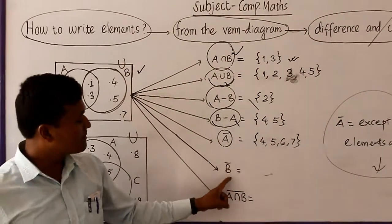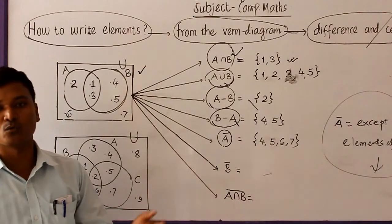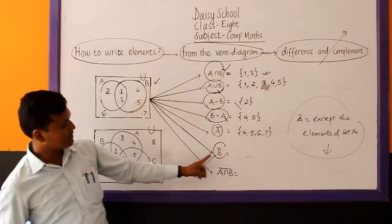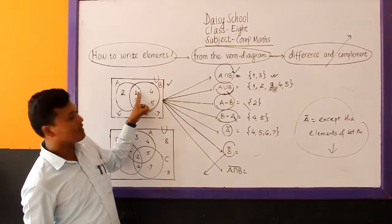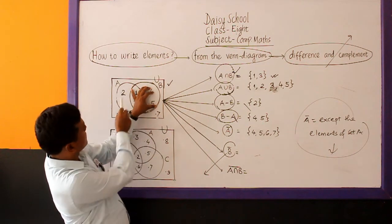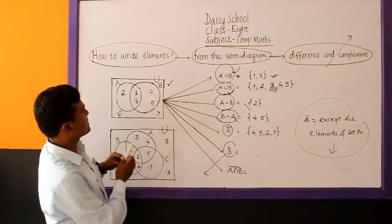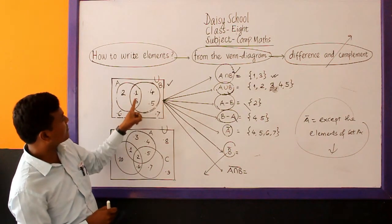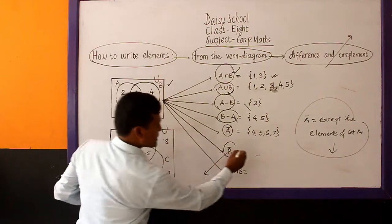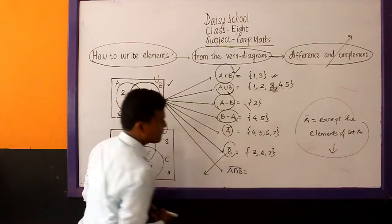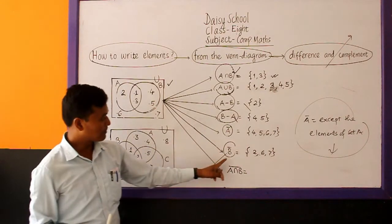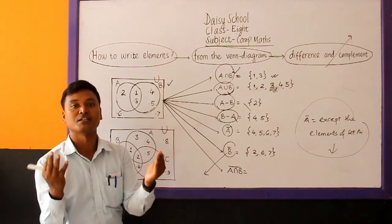Similarly, B complement — except the elements of set B, we should write the remaining elements of universal set. The elements of set B are 1, 3, 4, and 5. The remaining are 2, 6, and 7. So B complement is equal to 2, 6, and 7 from the first Venn diagram. A complement — except elements of set A, write all. B complement — except elements of set B, write all.